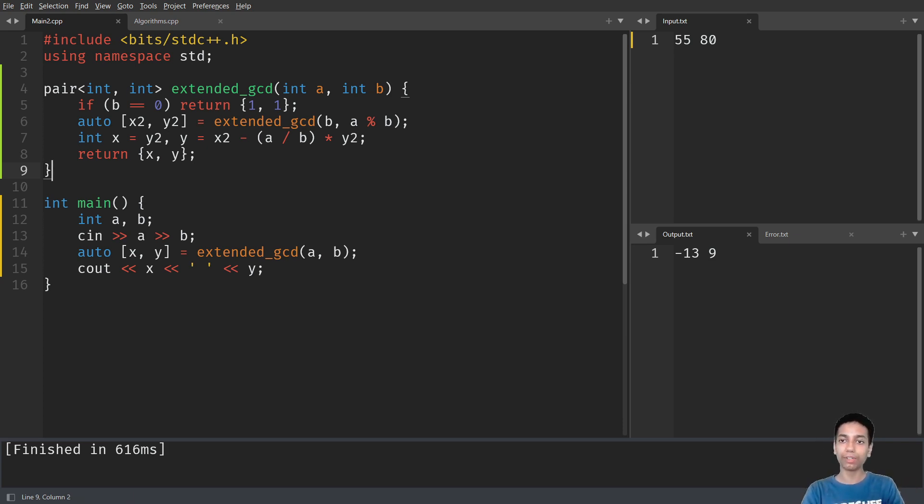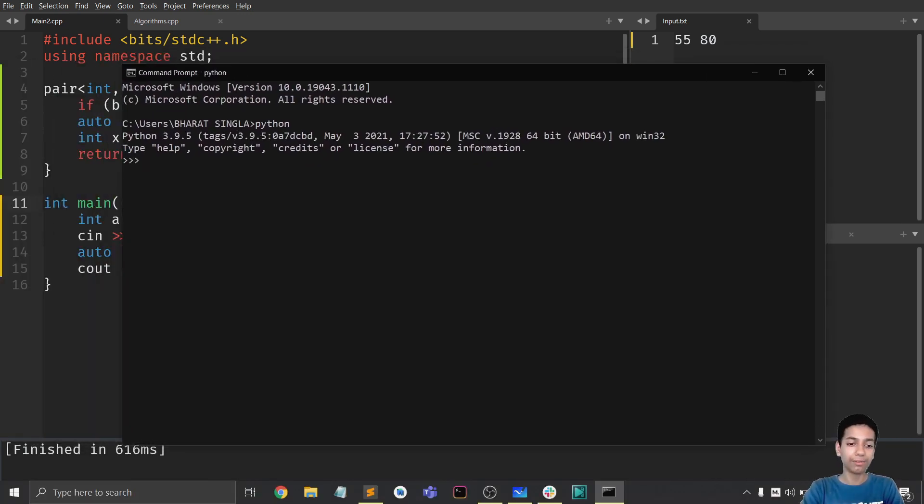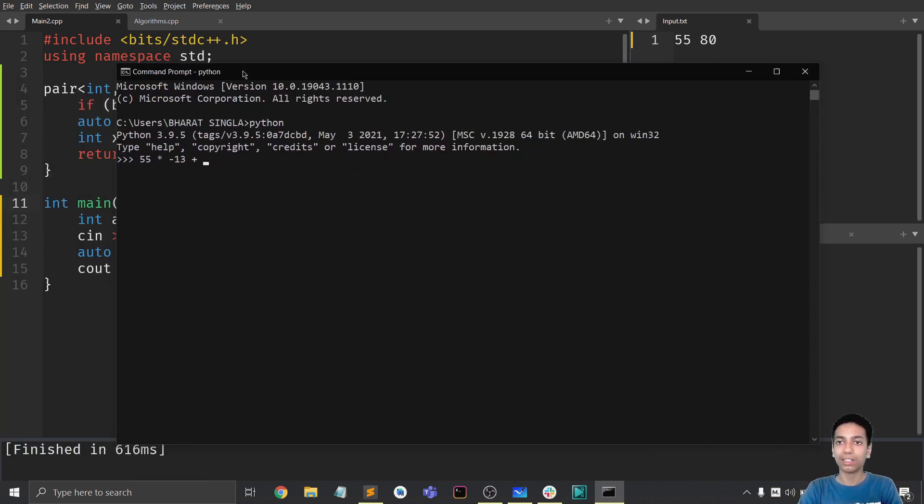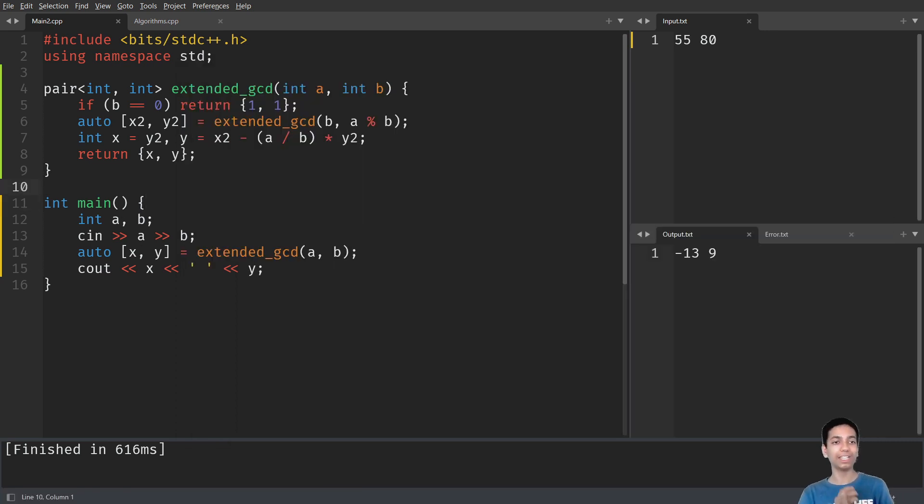Let's see if 55 times minus 13 plus 9 times 80 equals GCD of 55 and 80, that is 5. This is something I want to show you. 55 times minus 13 plus 80 times 9. We get 5 and the GCD of 55 and 80 is also 5.